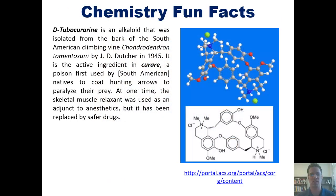And now, an interesting chemistry fun fact of the day. D-tubocurarine is an alkaloid that was isolated from the bark of the South American climbing vine Chondrodendrum tomentosum by J.D. Dutcher in 1945. It is the active ingredient in curare, a poison first used by South American natives to coat hunting arrows to paralyze their prey. At one time, this skeletal muscle relaxant was used as an adjunct to anesthetics, but it has since been replaced by safer drugs.